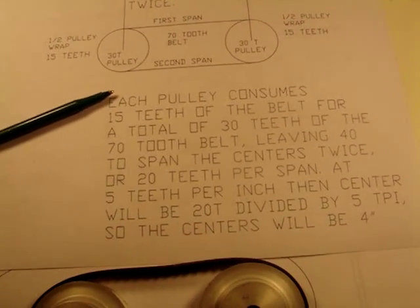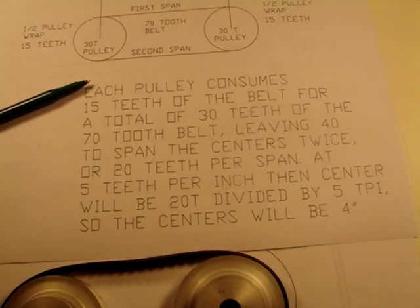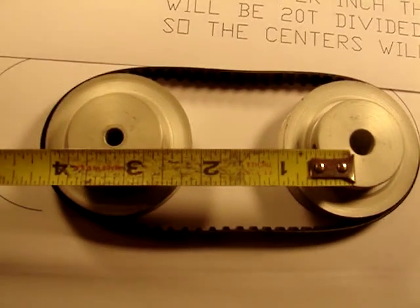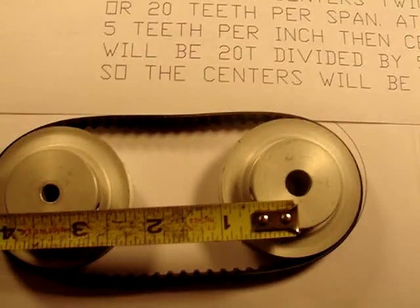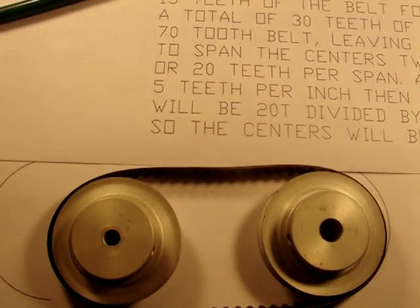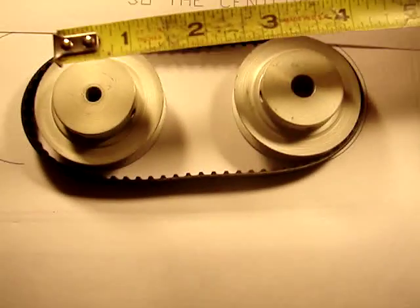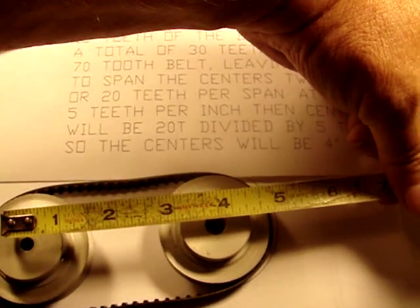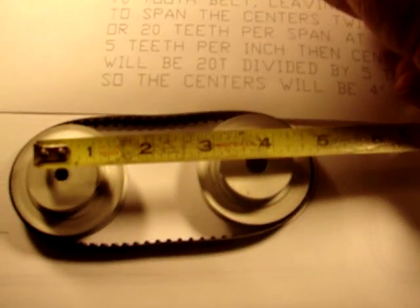Looking at my tape measure here, here's the calculation. I've got the tape measure upside down of course. You can see that when I push the pulleys out, it's very close to 4 inch pulley span. If I tighten the belt up, it would be.